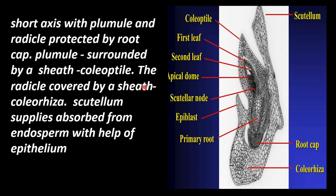The scutellum, normally in monocot plants, is the cotyledon called scutellum. This supplies energy — that is, food — absorbed from the endosperm to the embryo with the help of the epithelium. The scutellum is attached to the lateral side of the embryonal axis and supplies food absorbed from the endosperm to the embryo via the epithelium.